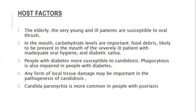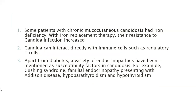Any form of local tissue damage may be important in the pathogenesis of candidiosis. Candida paronychia is more common in people with psoriasis. Some patients with chronic mucocutaneous candidiosis have had iron deficiency, and with iron replacement their resistance to Candida infection increases. Candida can interact directly with immune cells such as regulatory T-cells. Apart from diabetes, a variety of endocrinopathies have been mentioned as susceptible factors for candidiosis, for example Cushing's syndrome, familial endocrinopathy presenting with Addison's disease, hypoparathyroidism, and hypothyroidism.